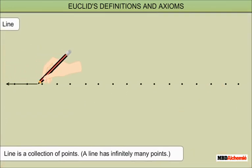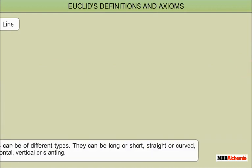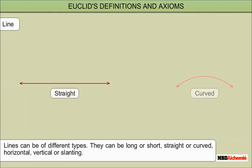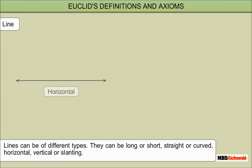Line: A line is a collection of points. A line has infinitely many points. Lines can be of different types. They can be long or short, straight or curved, horizontal, vertical or slanting.